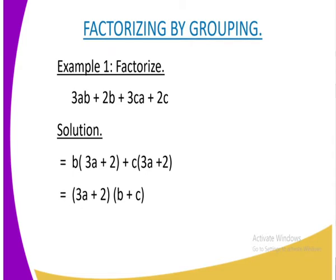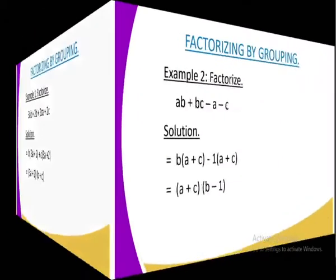What we normally do from there, we get the factors which are outside. Remember, whatever is in the brackets is the same, so we just take only one of them. That is why we are having (3a plus 2)(b plus c).